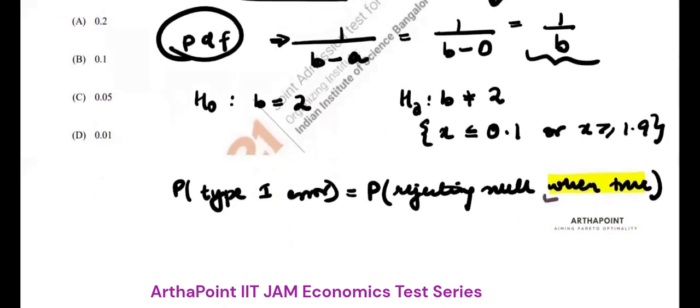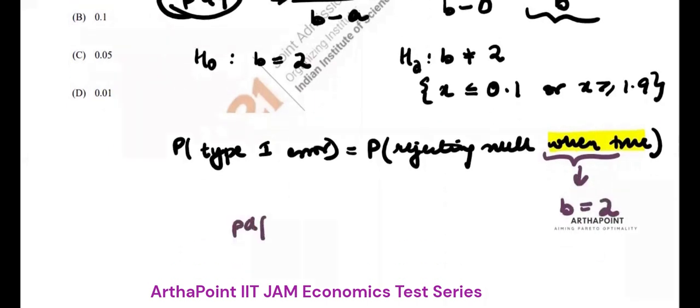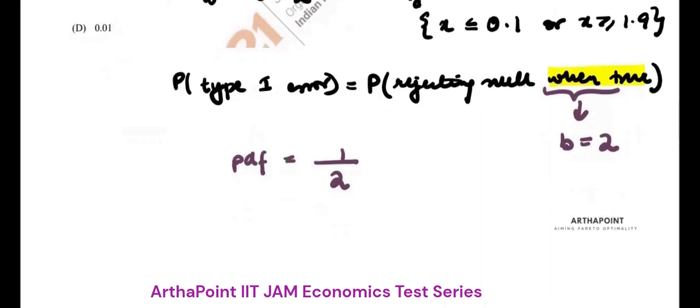We know that because here I am seeing when null is true, so the value of B becomes 2. So my probability density function becomes 1 by 2 because it was 1 by B. Now we have to find the probability of rejecting null. When will you reject null?